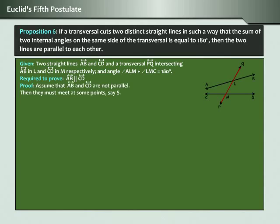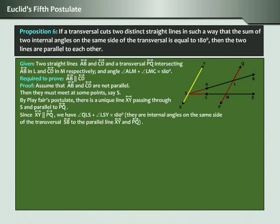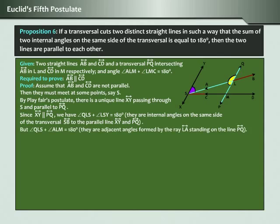Proof: Assume that AB and CD are not parallel; then they must meet at some point, say S. By Playfair's Postulate there is a unique line XY passing through S and parallel to PQ. Since XY is parallel to PQ, we have angle QLS plus angle LSY equal to 180 degrees, as they are internal angles on the same side of the transversal. But angle QLS plus angle LM is equal to 180 degrees, as they are adjacent angles formed by the ray LA standing on the line PQ.